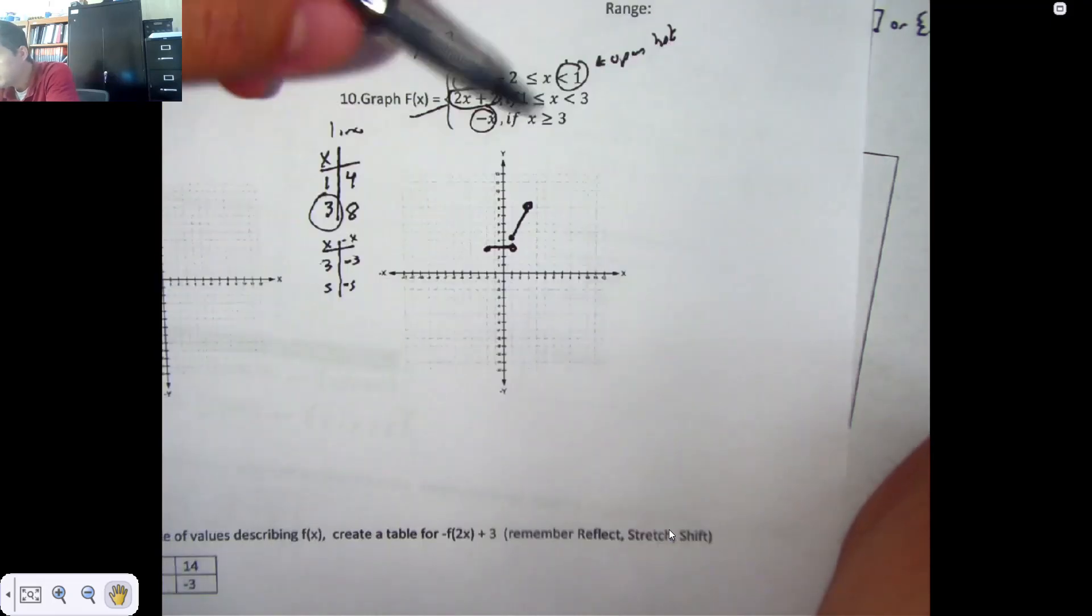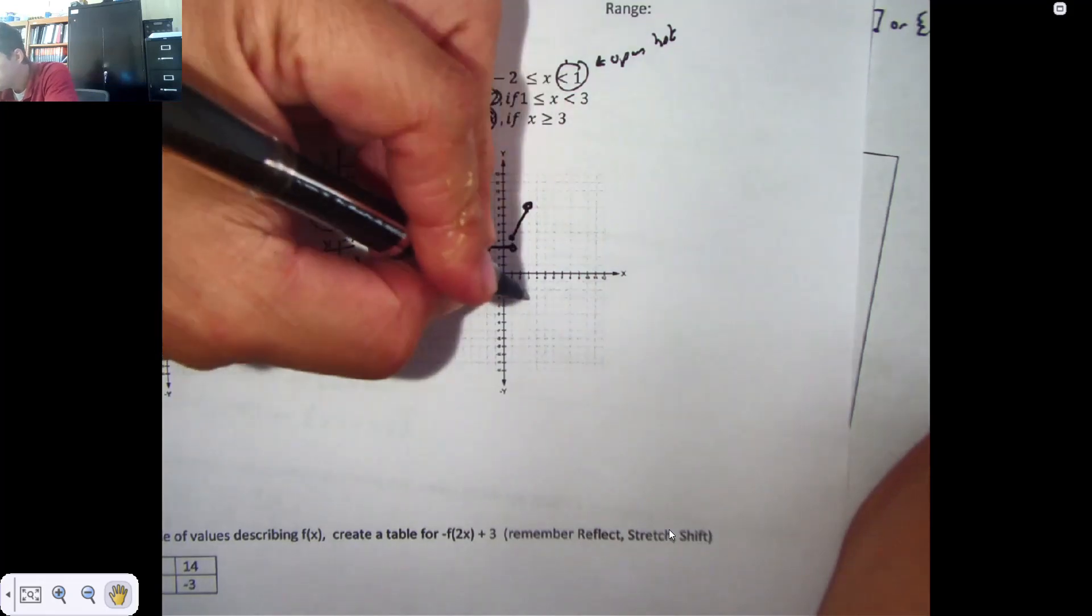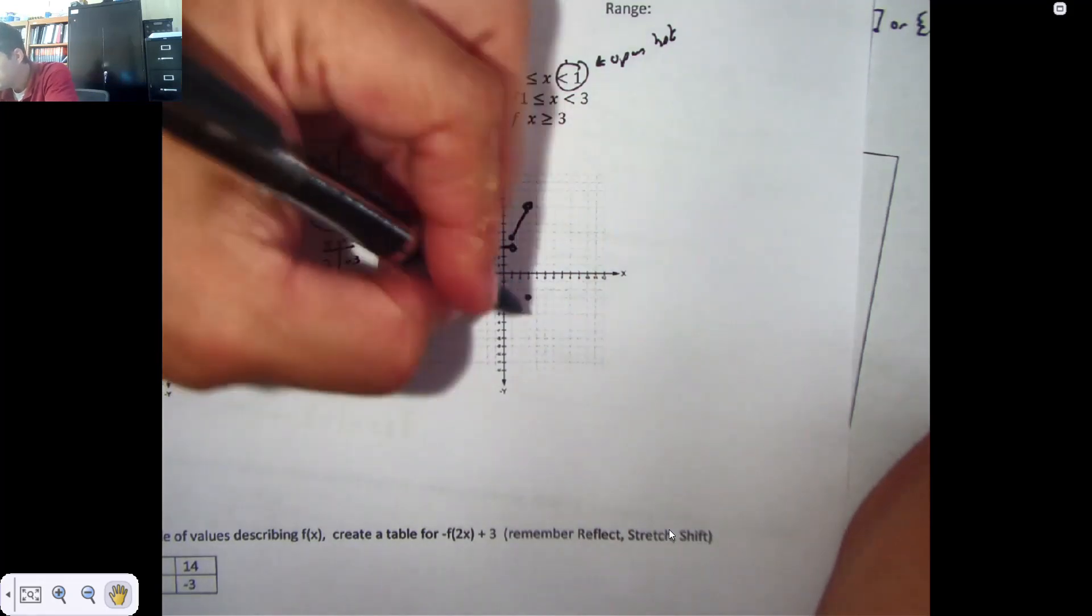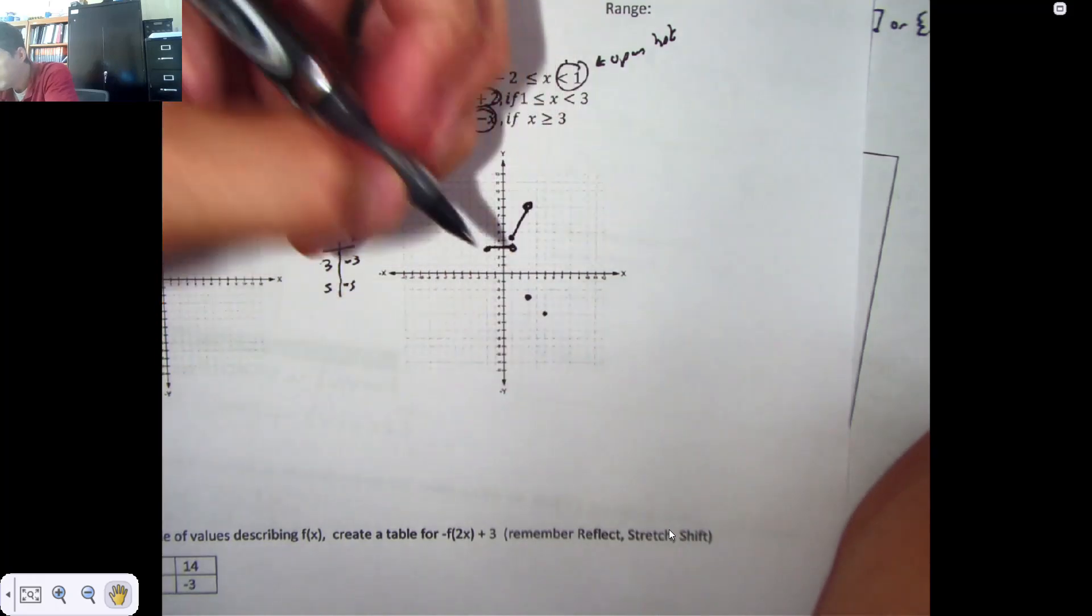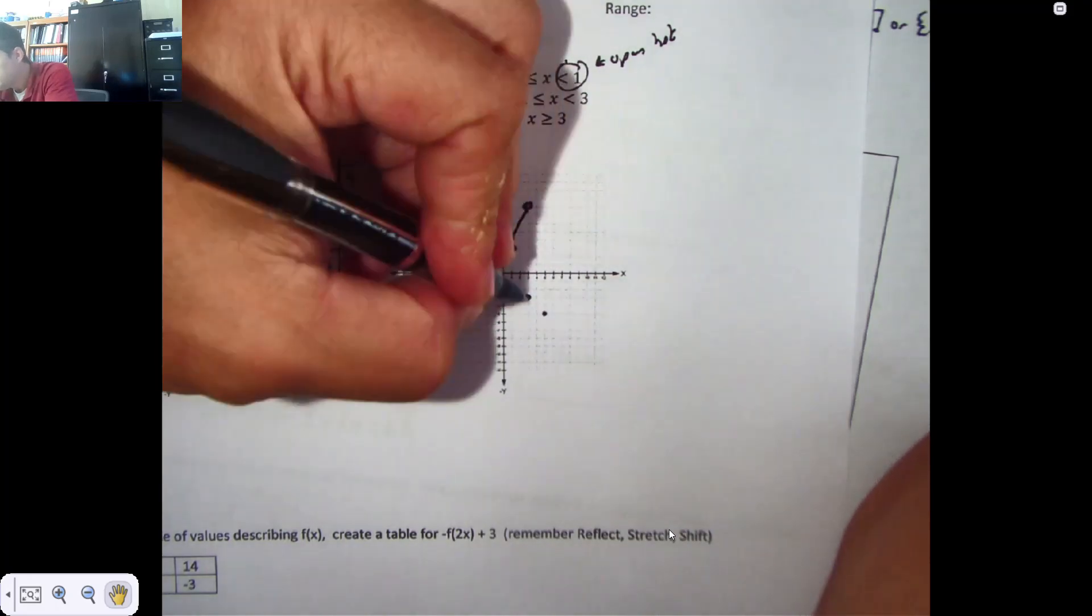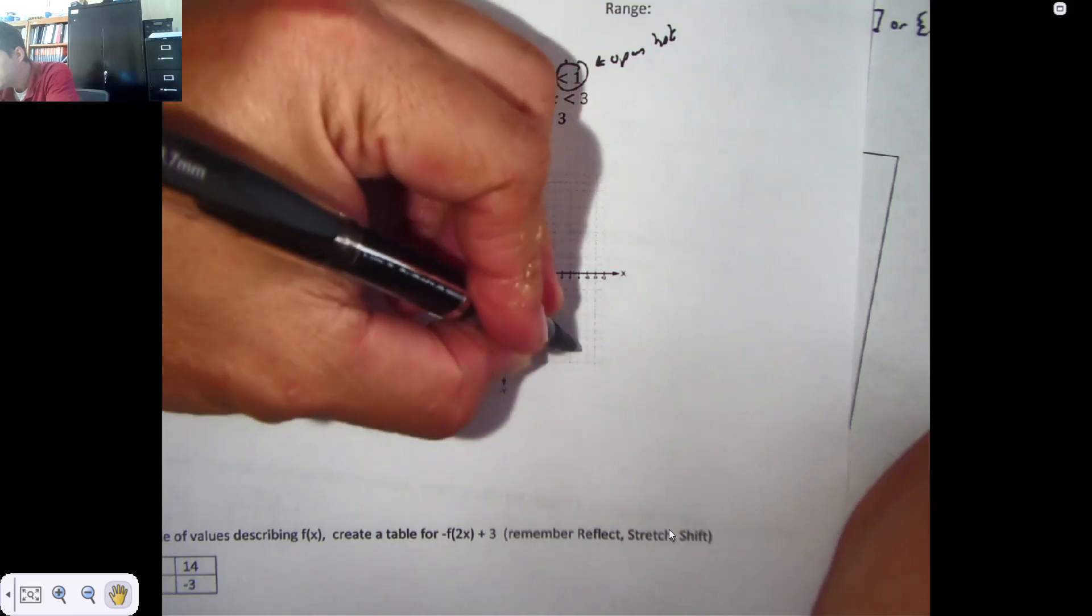But I have to start with this one. So when I plug in a 3, I get a negative 3 back. If I plug in a 5, I get a negative 5 back, and I can continue that pattern forever. So it's going to continue on to the right forever.